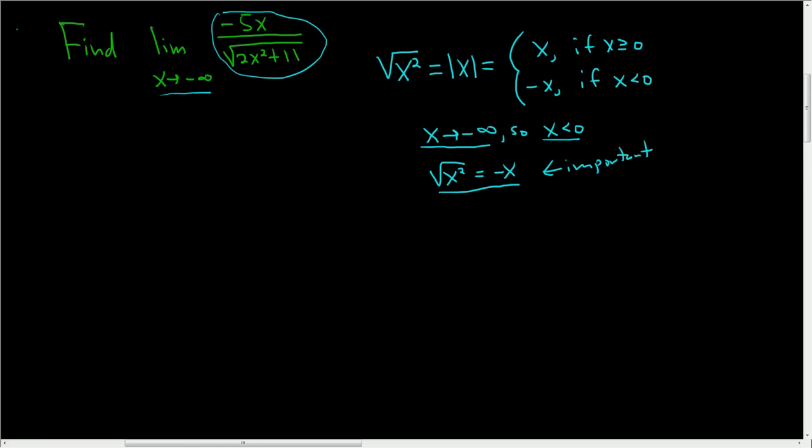All right, let's do it. Let's do this problem. So this is the limit as x approaches negative infinity. And we're going to divide everything by the square root of x squared, so the numerator and denominator. So it looks like it's more convenient to use negative x in the numerator, because that way we have some cancellation.